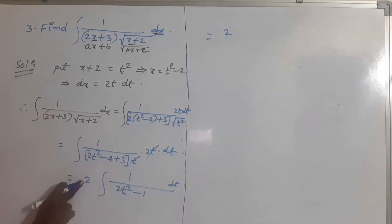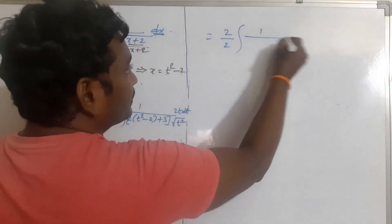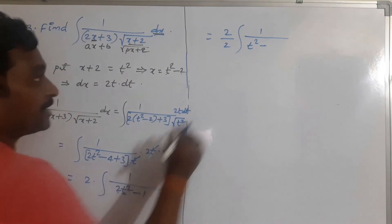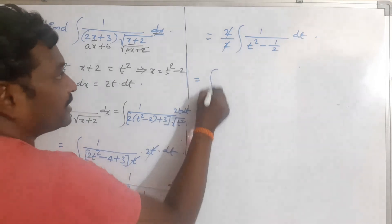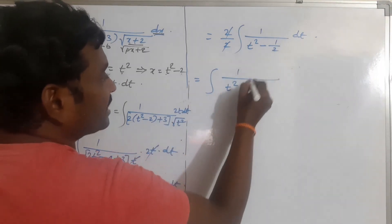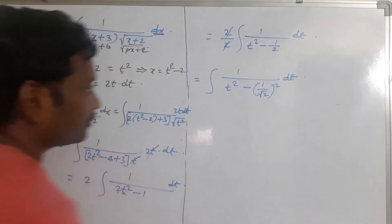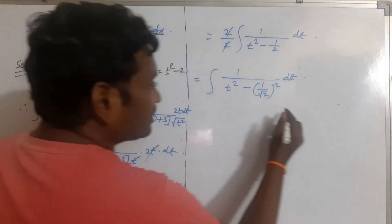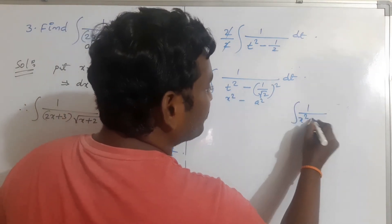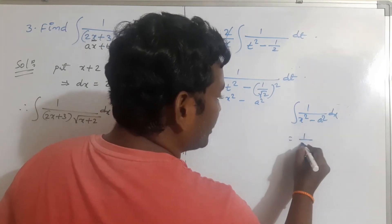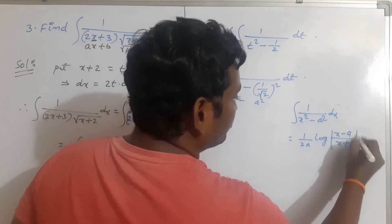So 2 is the constant outside the integration: 2 times integration of 1 by (2t squared minus 1) dt. Make the coefficient of t squared equal to 1, giving another 2 in the denominator. So we get integration of 1 by (t squared minus 1/2) dt. This is in the form of integration of 1 by (x squared minus a squared) dx, whose formula is 1 by 2a times log mod (x minus a) by (x plus a) plus c.